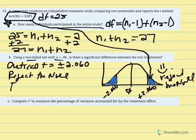Since t equals 2.071 falls into the critical region, we get to reject the null. The probability of obtaining a t-statistic of 2.071 is less than our alpha, because it fell into the critical region. The likelihood of obtaining that t-value if the null is true is less than a 5% chance.